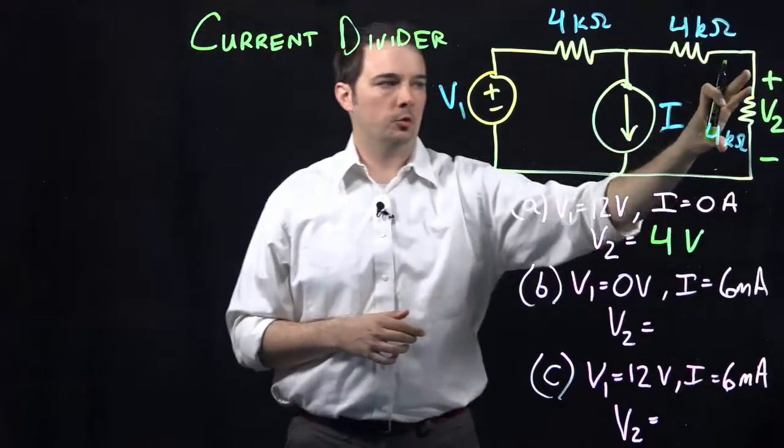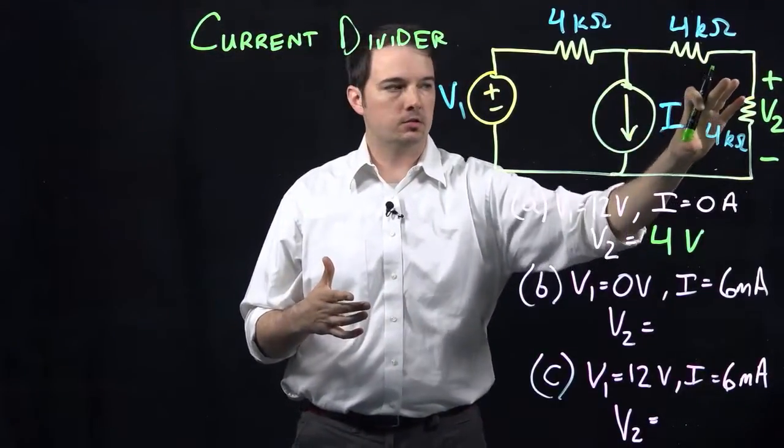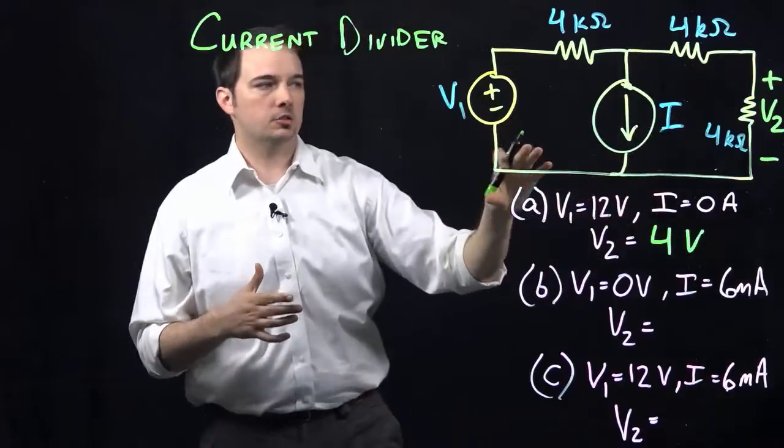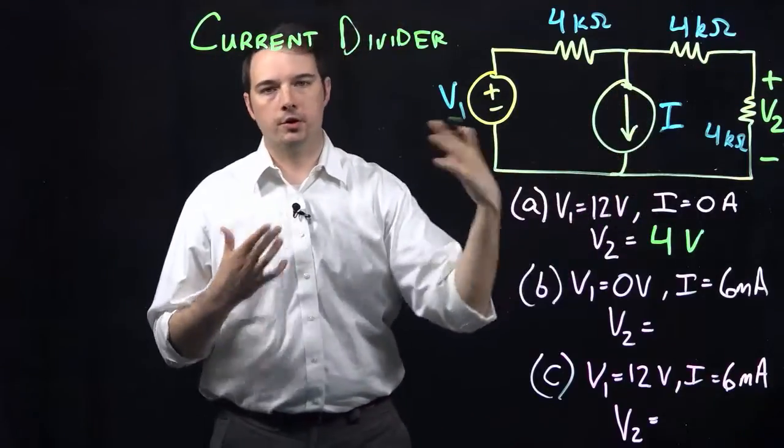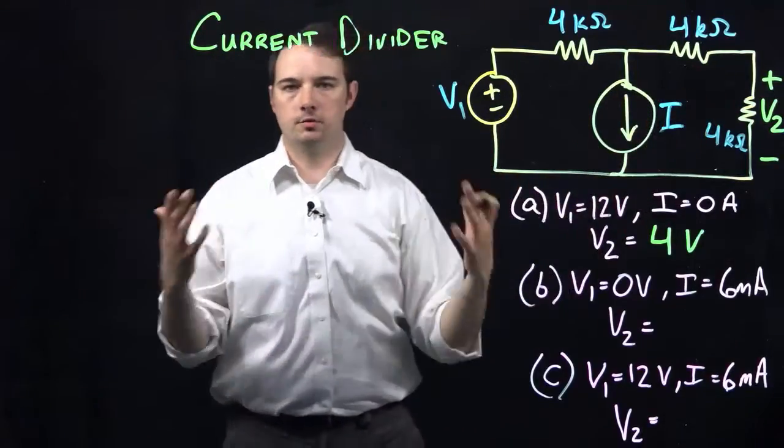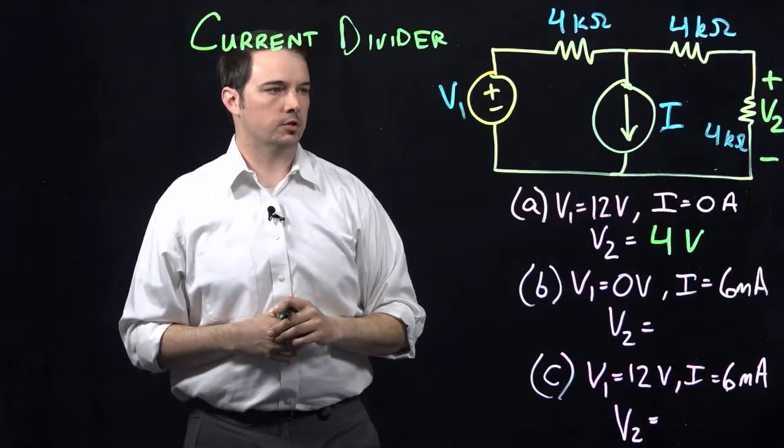Because even though we're trying to ultimately find a voltage across this resistor here, the easiest way to do that is to figure out what the current flow is through that resistor, then we'll simply use Ohm's law to figure out what that actual voltage is.